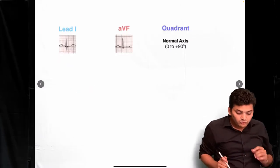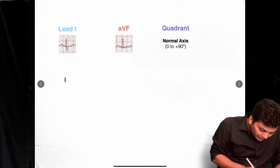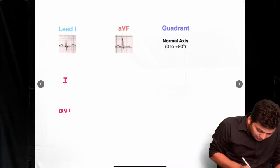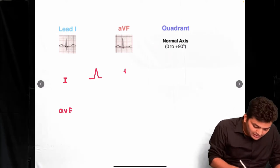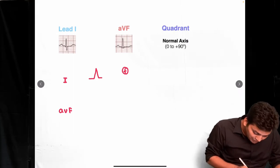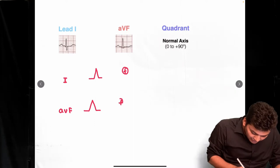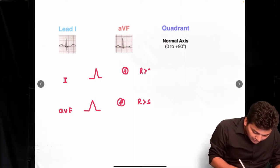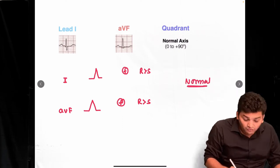To use this information, we are going to look at Lead I and AVF. If Lead I is showing a positive deflection — meaning the R wave is bigger than the S wave — and AVF is also showing a positive wave, meaning the R wave is bigger than the S wave, then we are going to say it is normal axis.